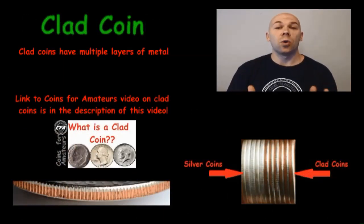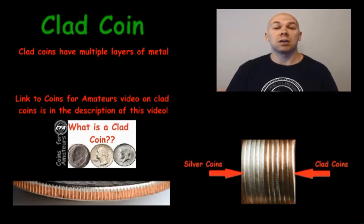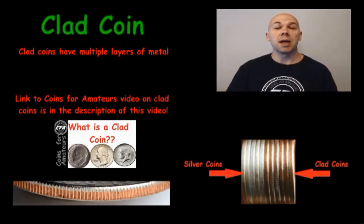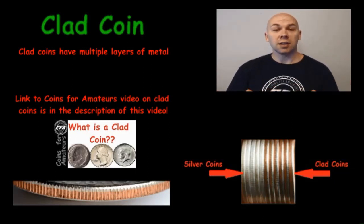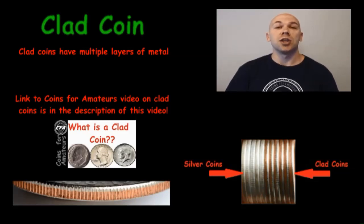Clad coins. Many of you have heard this term before, and here at Coins for Amateurs we actually have a video that goes more in depth on clad coins. Clad refers to a coin that is made of multiple layers of metal. This can often be determined by looking at the edge of the coin, where non-clad coins like silver are all one color and clad coins show more than one color or layer. You're typically going to see this more on US coins than on foreign coins.